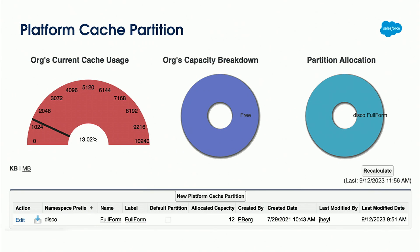I want to walk through the visualizations and functionality available inside Salesforce for managing and diagnosing platform cache usage. Here you can see an example of a cache being utilized — there's dashboard information for how much of the cache is being used, what type of cache you're using, and it's dedicated to that AppExchange free capacity. You can also set up different partitions for different use cases. If you have 10 megabytes, you could dedicate two to a specific use case and eight to another.